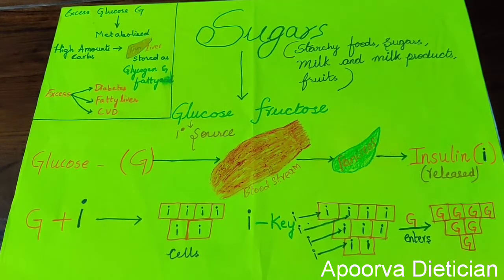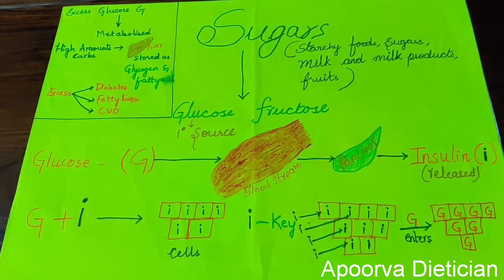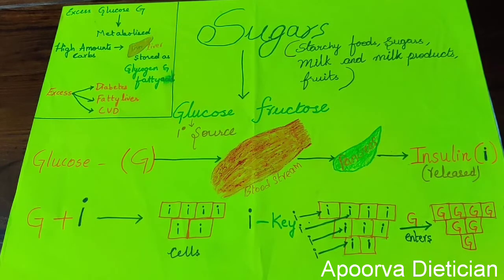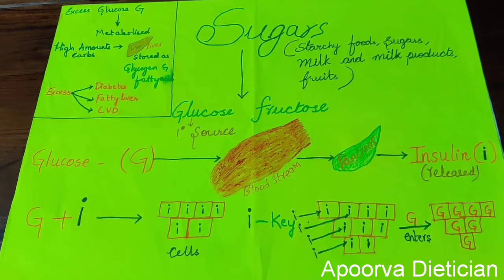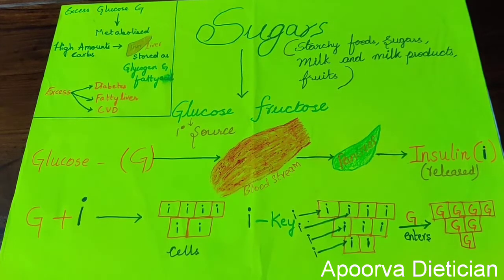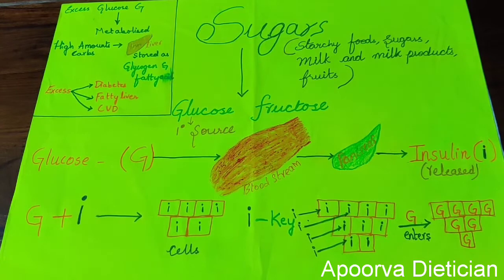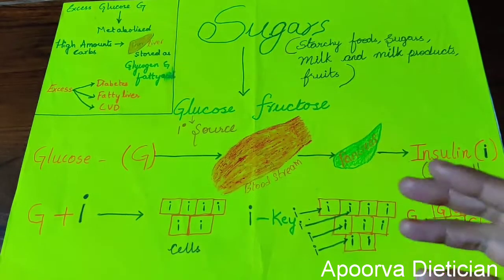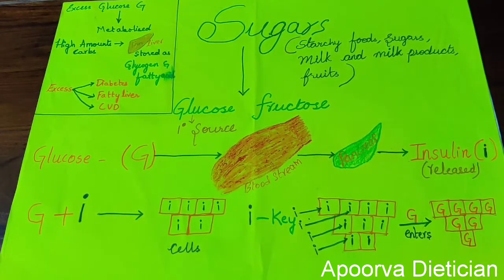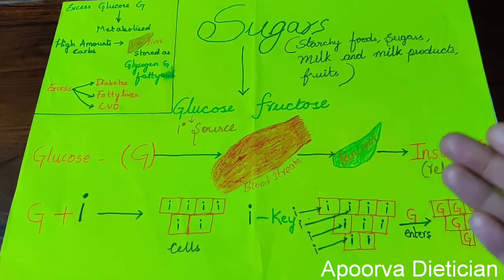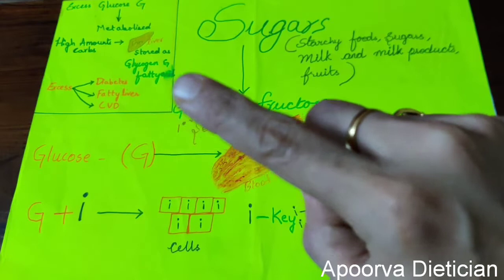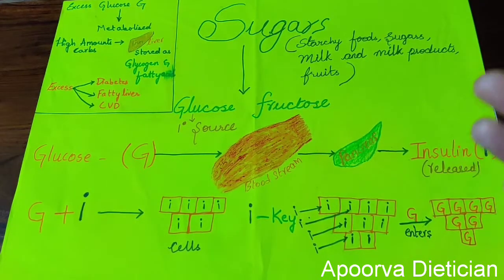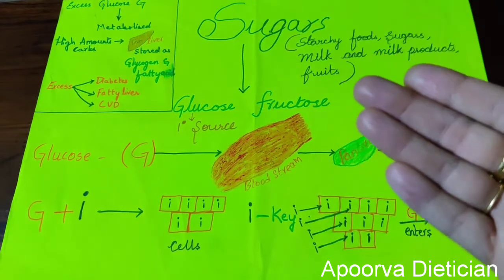When there is a little excess glucose, the cells, in the presence of insulin, still absorb it and release energy to perform functions. But if you are taking high amounts of carbohydrates, the liver stores the excess carbohydrates or fats in the form of glycogen and fatty acids.